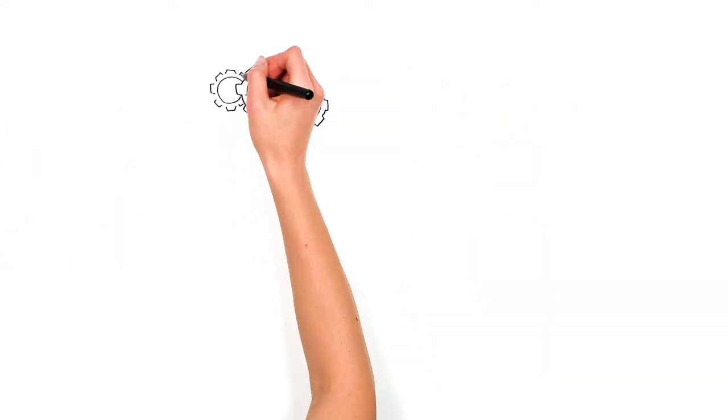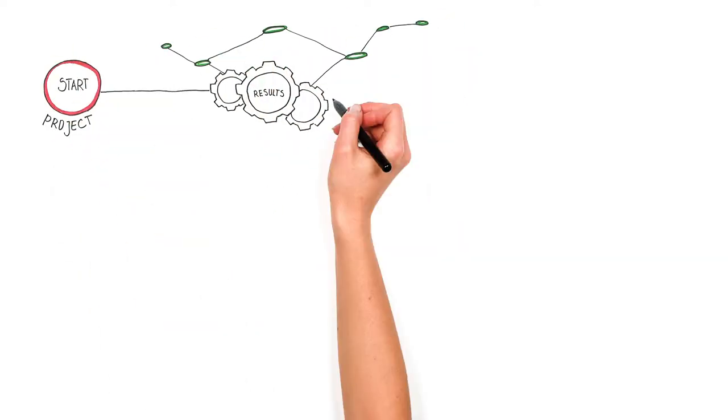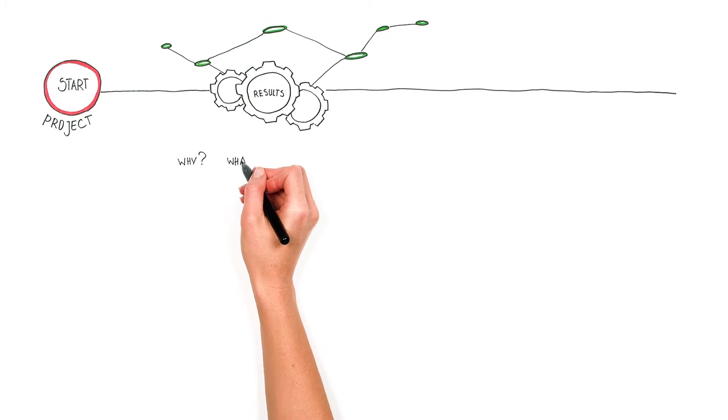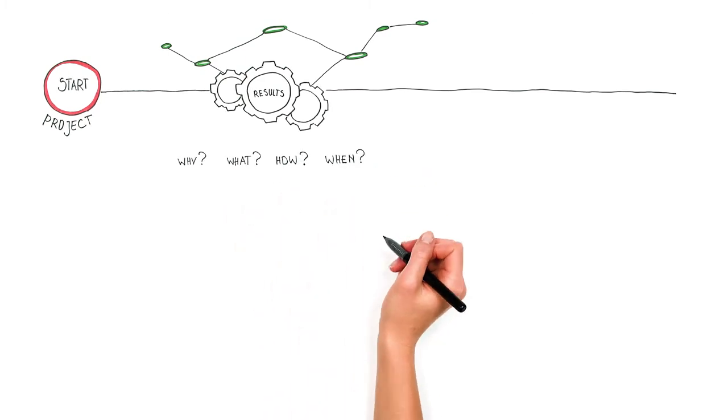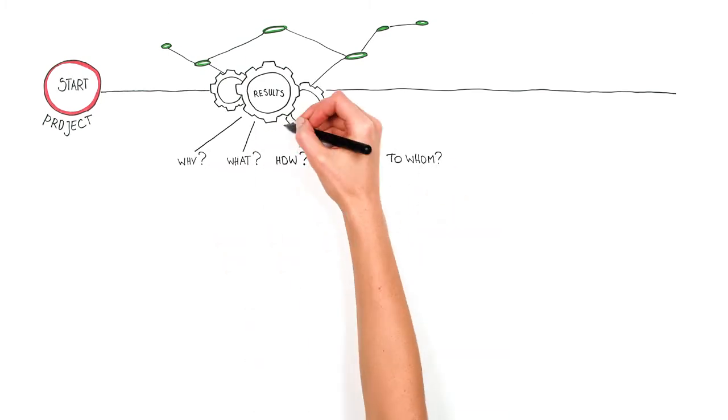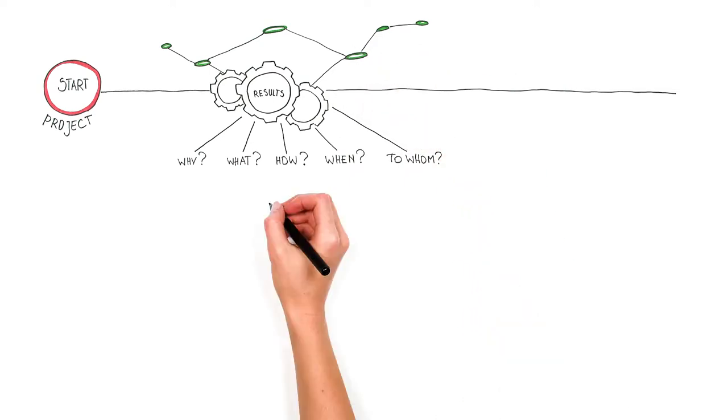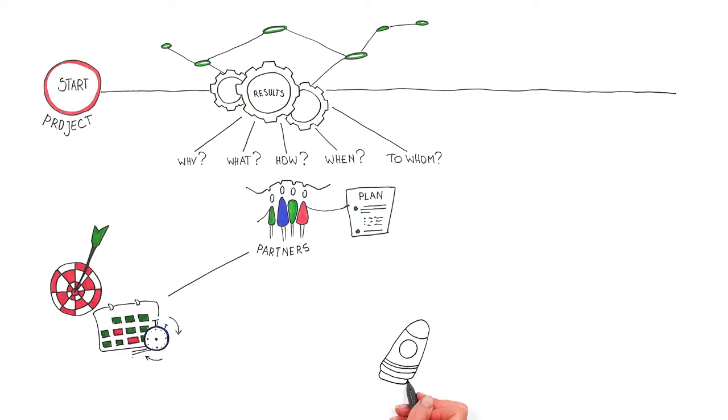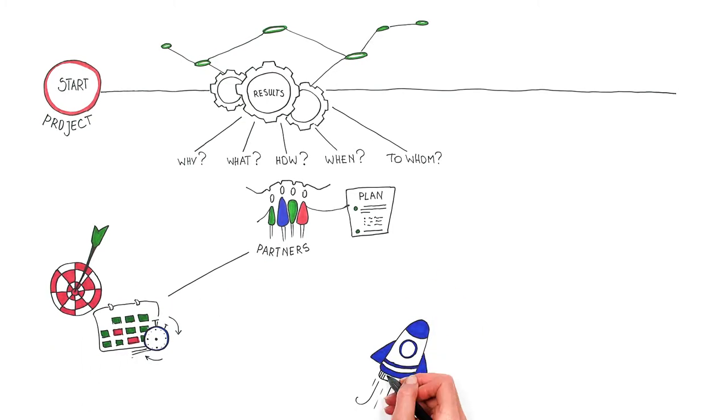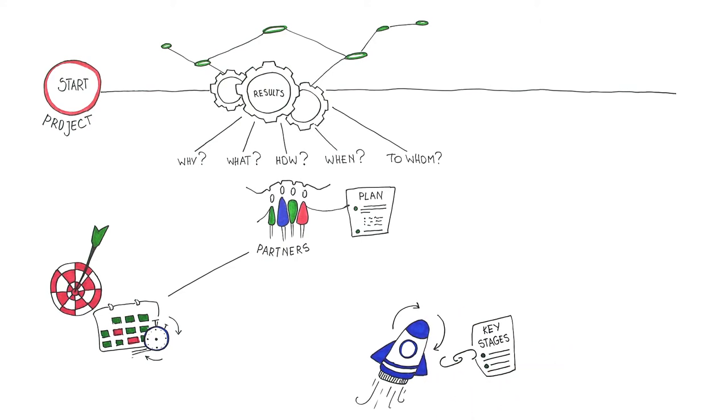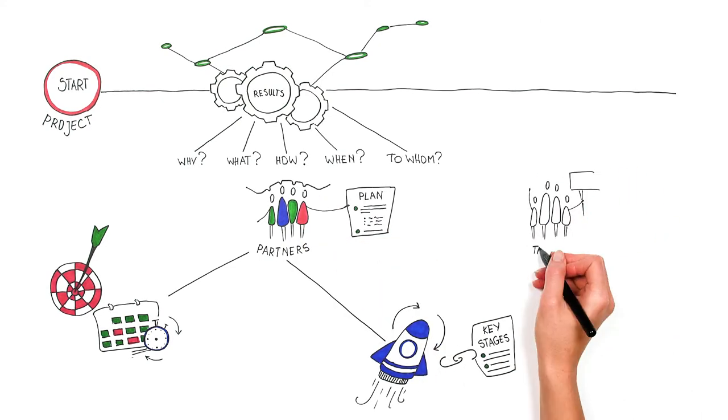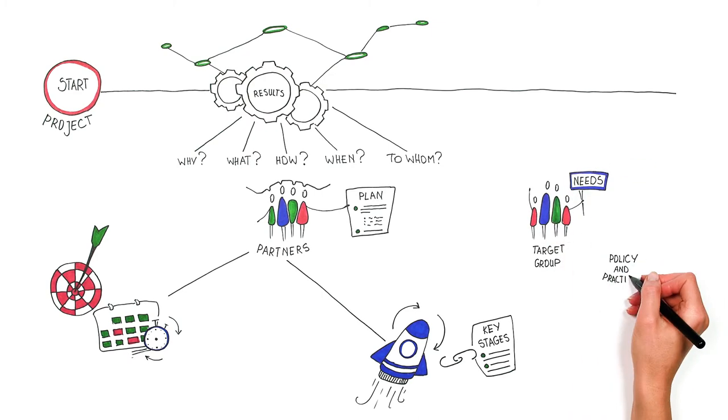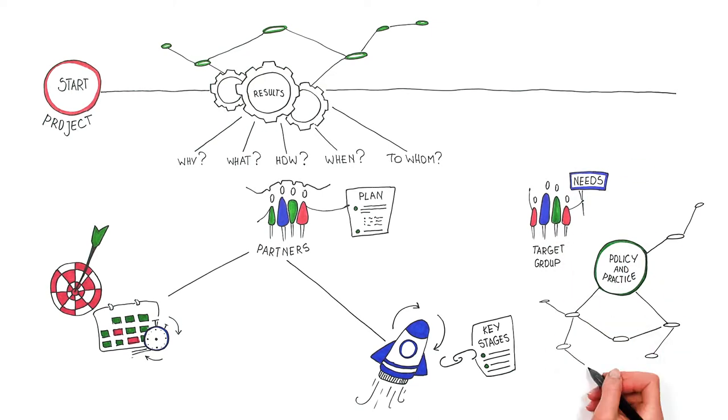To effectively disseminate the results, an appropriate process must be designed at the beginning of the project. It should cover why, what, how, when, to whom the results are targeted both during and after the funding period. Partners should make a plan together and agree on realistic targets and deadlines for progress monitoring. Align dissemination and exploitation activities with the key stages of the project, offer sufficient flexibility to respond to the needs of the target group as well as wider development in policy and practice.